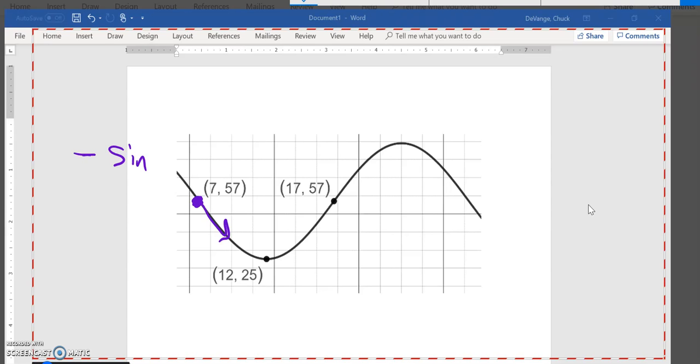goes up, so I know it's going to be a negative sine. Looks like my midline is here at 57, so I know it's going to be 57. And then it's flipped over, it's going down, so it's going to be minus. And then I need this amplitude, how far is my offset. So I could go 57 minus 25, that's 32.